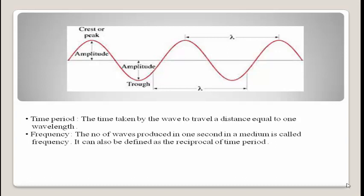The next important term is frequency. Frequency is the number of waves produced in one second in a medium. It can also be defined as the reciprocal of time period. The formula is: f = 1/T, where f stands for frequency and T stands for time period. The SI unit of frequency is per second, s⁻¹, or hertz (Hz).